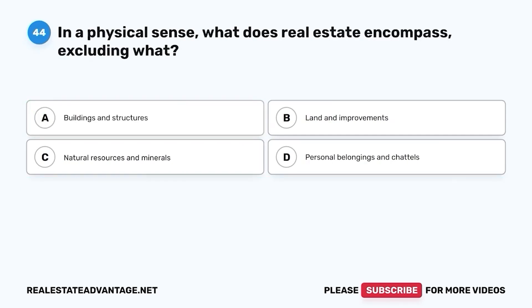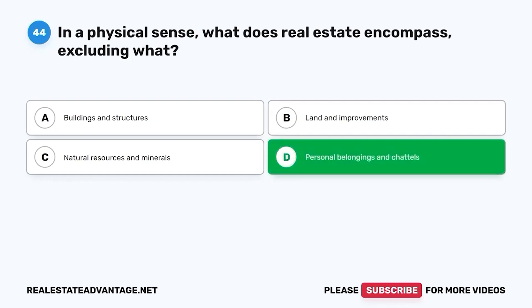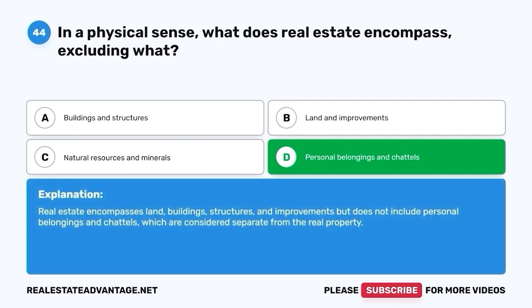Question 44. In a physical sense, what does real estate encompass, excluding what? The correct answer is D. Personal belongings and chattels. Real estate encompasses land, buildings, structures, and improvements, but does not include personal belongings and chattels, which are considered separate from the real property.